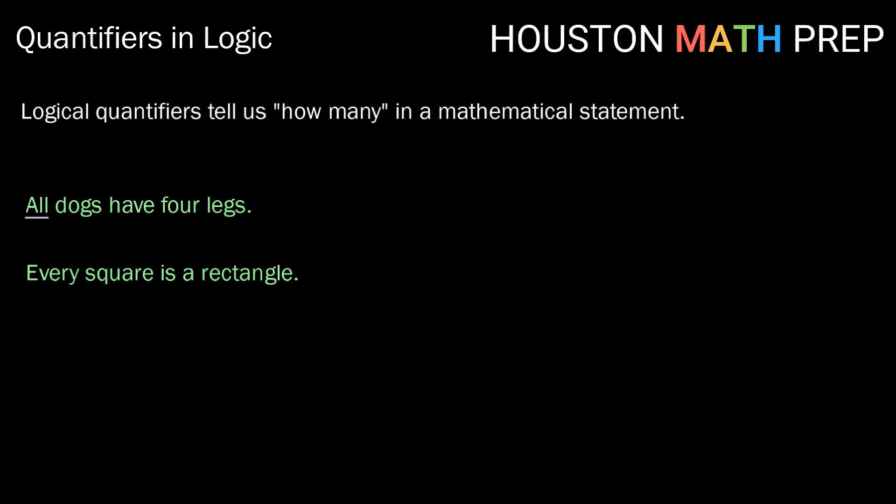Every square is a rectangle. In this case, every is our quantifier. No markers are blue. No is our quantifier.